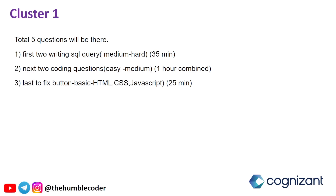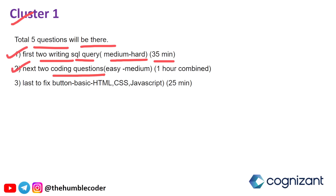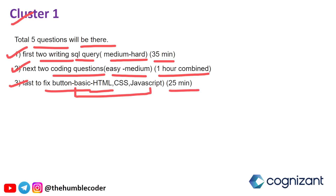Based on experience from previous exams, in cluster one there were a total of five questions. First, two SQL writing questions at medium to hard level with 35 minutes. Next, two coding questions at easy to medium level with one hour combined. Finally, two fix-the-bug questions in HTML, CSS, and JavaScript with 25 minutes. Note that this is not mandatory — some will get MCQs in HTML CSS and some will not, but this is the general structure to expect.